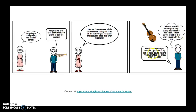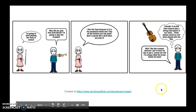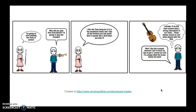Now the boy over here says, 'Well, I like the trumpet because I get to buzz my lips to get a sound out, and I've always liked the brass family the best.' And you see he's thinking, 'I wonder if we will have anyone play a string instrument in our class. Those always sound so nice when played with the bow.' So in this comic strip you see three different instruments, and those instruments talk about which family they are from and a little bit about what they might sound like.